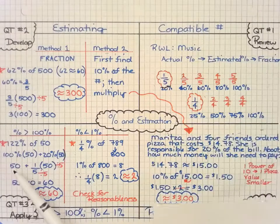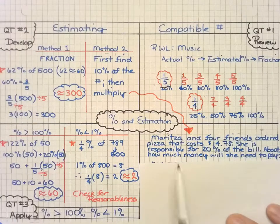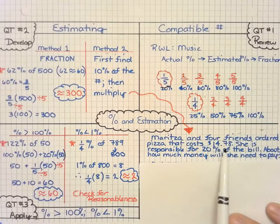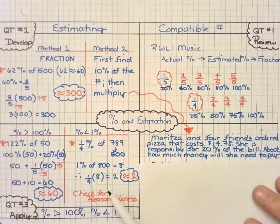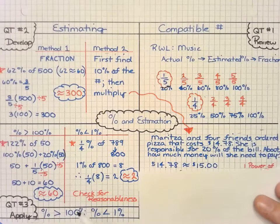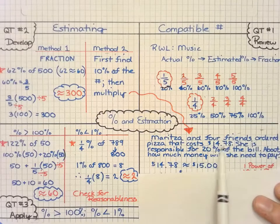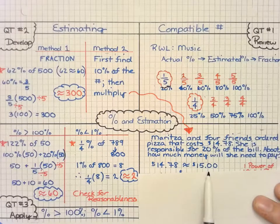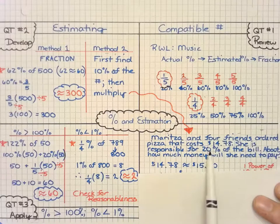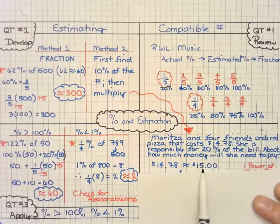Finally, the application problem that I like so much is that Maritza and four friends order pizza that costs $14.78. She is responsible for 20% of the bill. About how much money will she need to pay? Well, first of all, let's go ahead and round the money this time to about $15. It makes it an even number to work with.